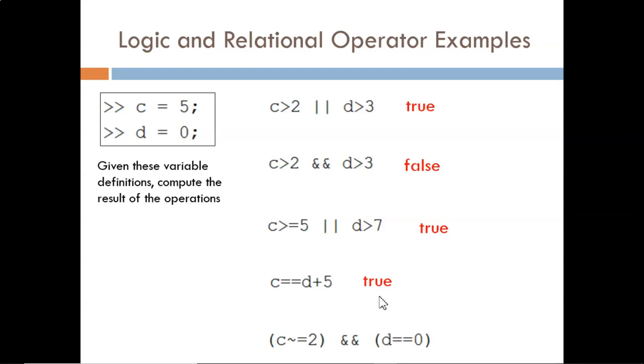The NOT equal to operation can tie your brain up in NOTs, so feel free to write down each step. Is it true that 5 is NOT equal to 5? No, that is FALSE. Is it true that 0 is equivalent to 0? Yes, that is TRUE. So, both inputs to the AND are TRUE, and the final output is TRUE.